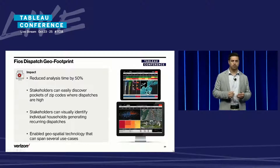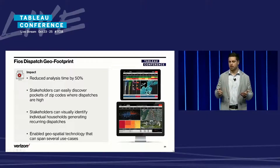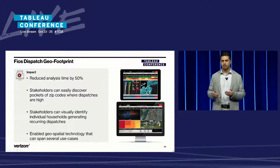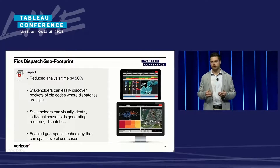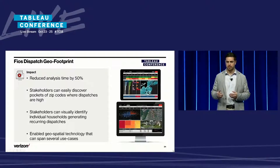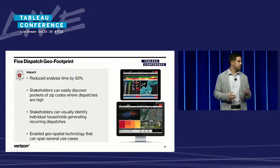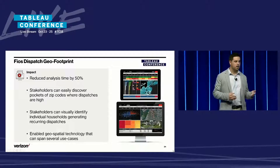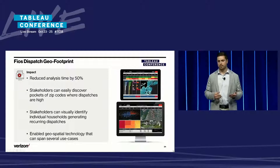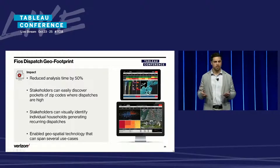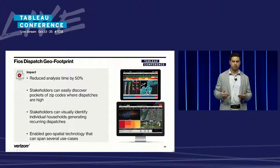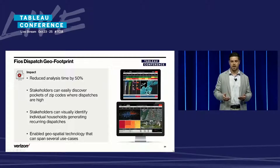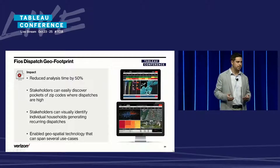And also just the geospatial technology in general — this technology can be used in many different use cases. It's not just this one for dispatches, but as pointed out, for any weather-related event or anything you're trying to map for your organization, you can use this technology with the Google Maps API to make that happen.